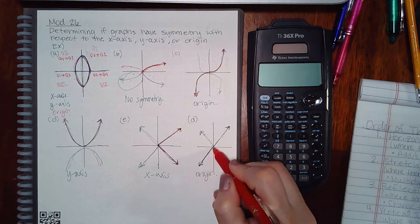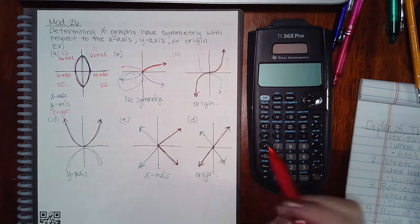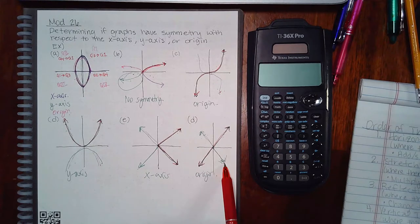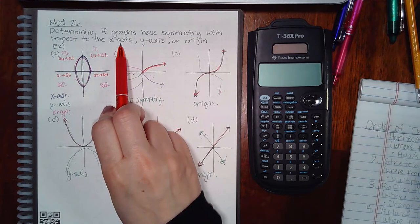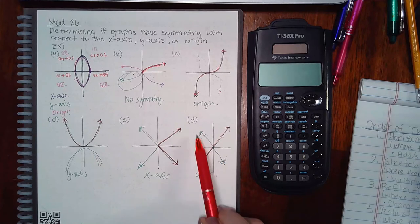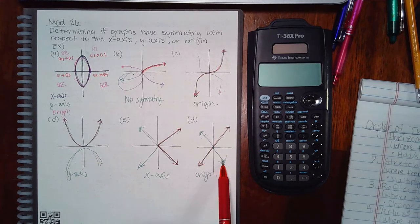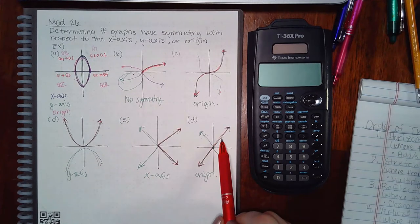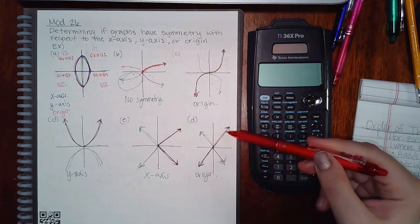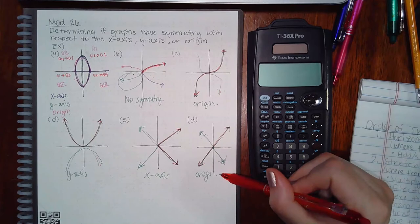Finally, for this graph which is just a line: flipping over the x-axis gives a green line that does not land on the original, so no x-axis symmetry. Flipping over the y-axis also gives a green line that does not land on the original, so no y-axis symmetry. But if I do both flips — flip over y and then over x — I do land on the original, so it does have symmetry with respect to the origin.